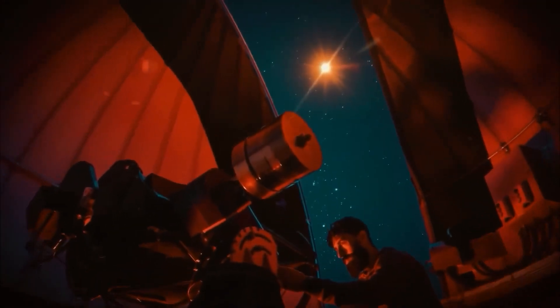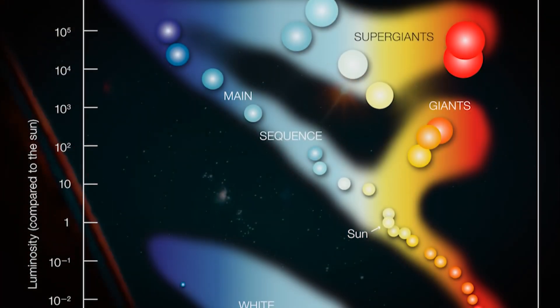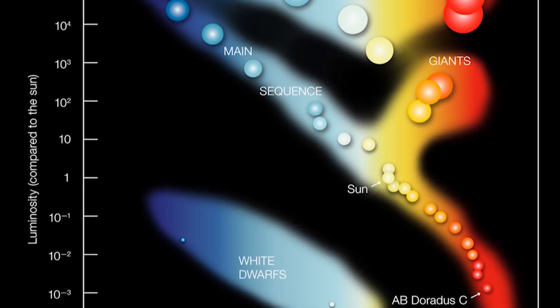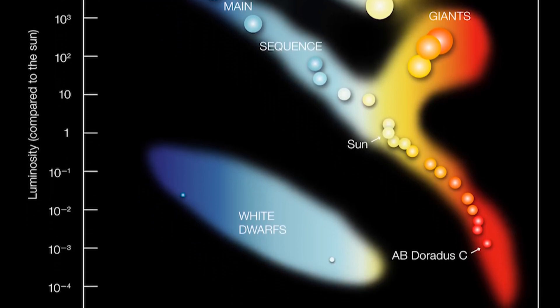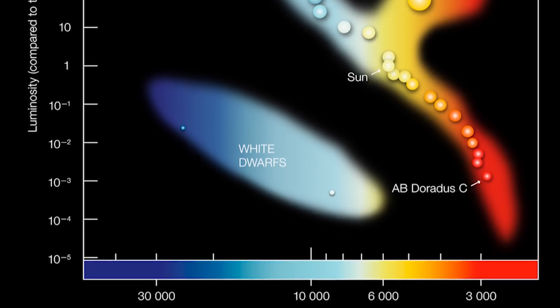Astronomers take on the role of cosmic detectives, using changes in brightness and color as clues, and comparing them with models to predict how stars evolve over time.